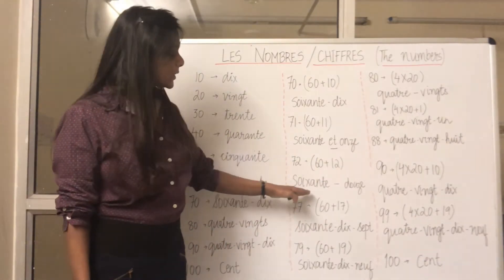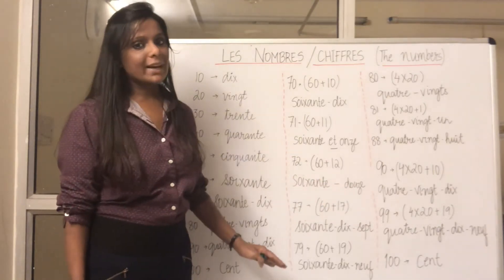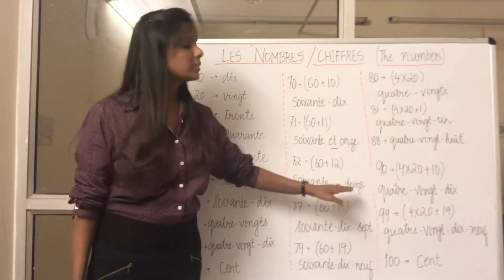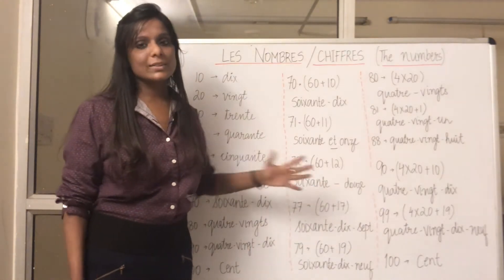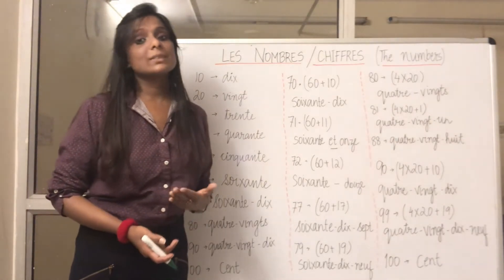So then 72 is 60 plus 12, so it becomes soixante-douze. So from here onwards we'll again put hyphen in between. Then the counting will be soixante-treize, soixante-quatorze, soixante-quinze, soixante-seize, soixante-dix-sept, soixante-dix-huit, soixante-dix-neuf.